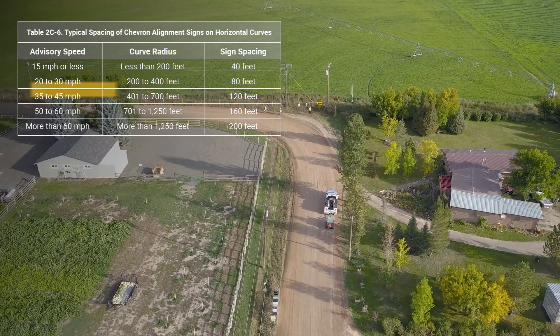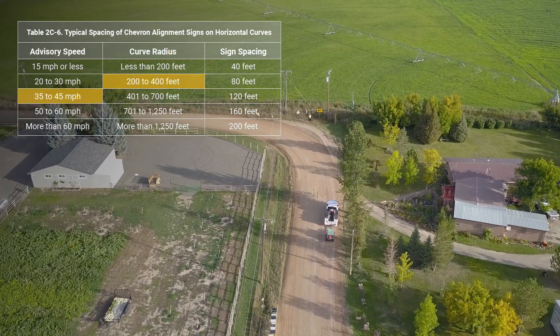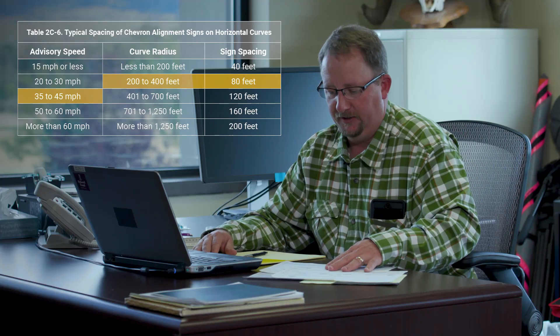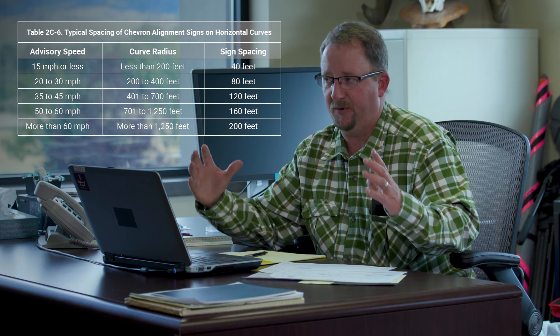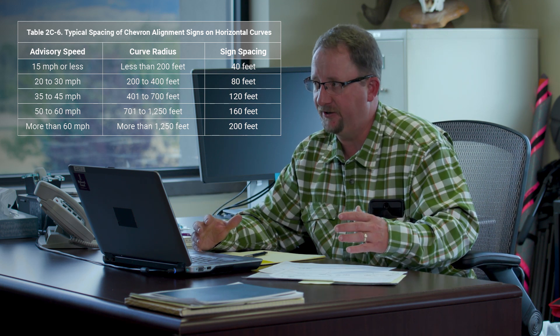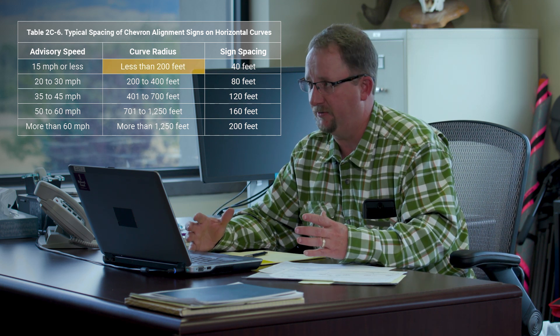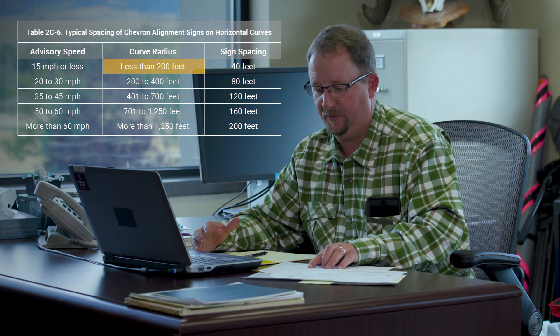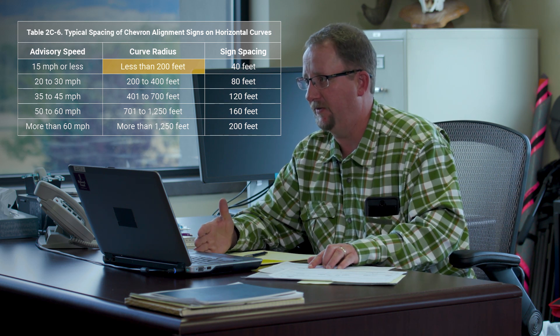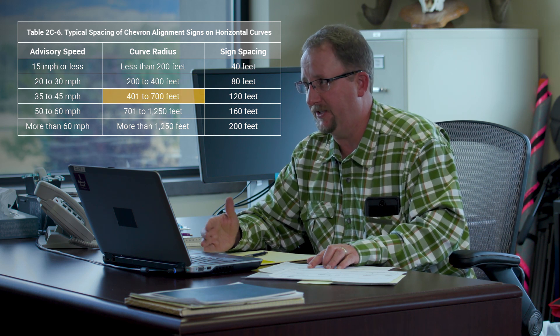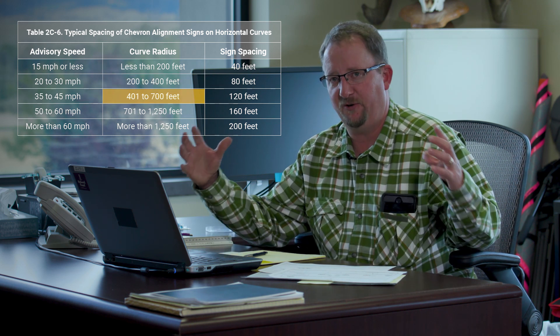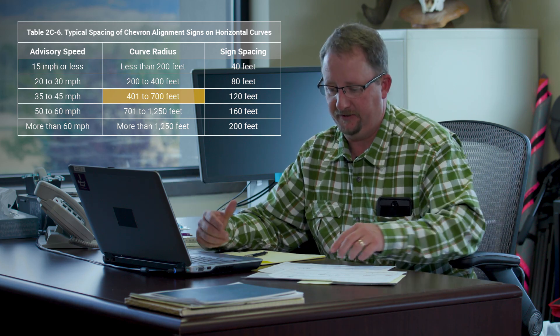If advisory speed and radius indicate different sign spacing, use the smaller spacing of the two. The curve radius classification breakdown is: less than 200 feet is one spacing, then the next grouping is 200 to 400 feet, and then 401 to 700 feet. They're in large bands of radius, so if you can get close with an online tool, you're probably going to be close enough.